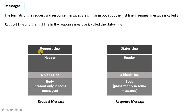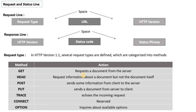But what is the difference? The first line differs: in the request message it is called the request line, and in the response message it is called the status line. The request line contains the request type, URL, and HTTP version.